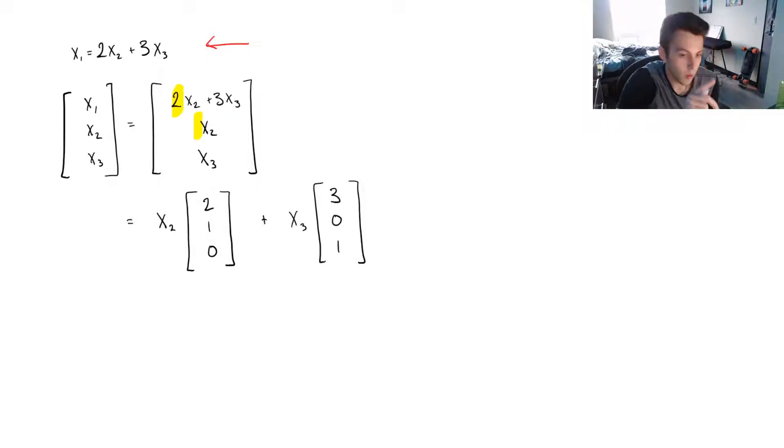So, remember, there's one little thing that we're missing here before we can say that these two vectors are a basis for S. And it's that we need to show that these vectors are linearly independent. And, remember, linearly independent means that I can't write them as a linear combination of each other. But, since I only have two vectors here, like, 2, 1, 0,